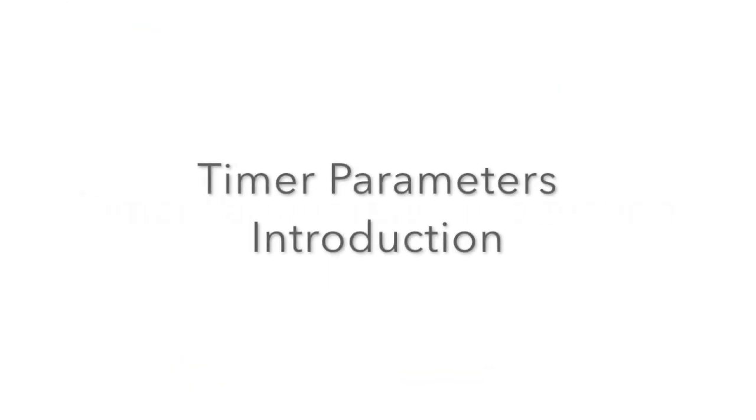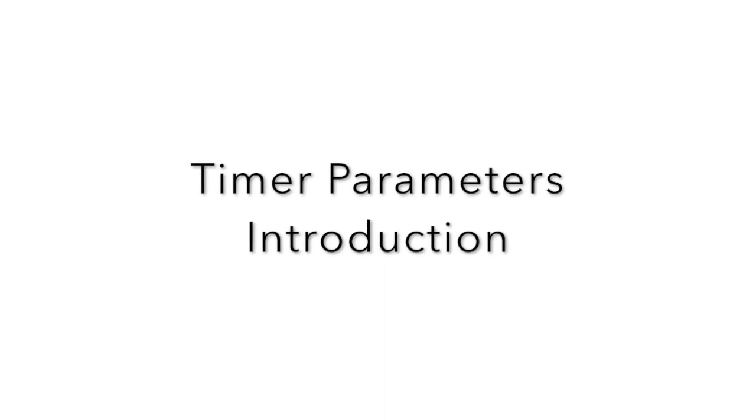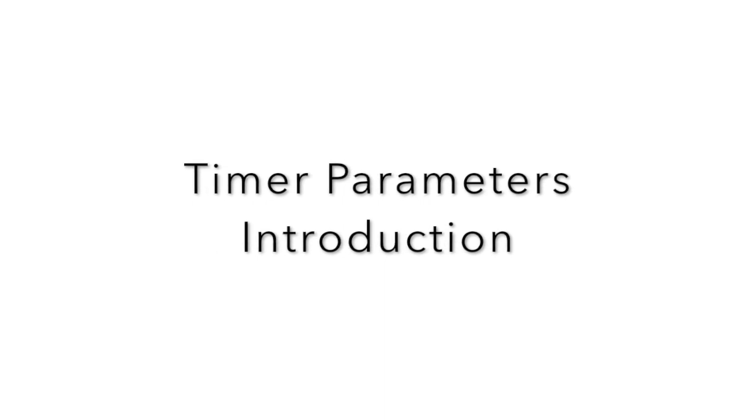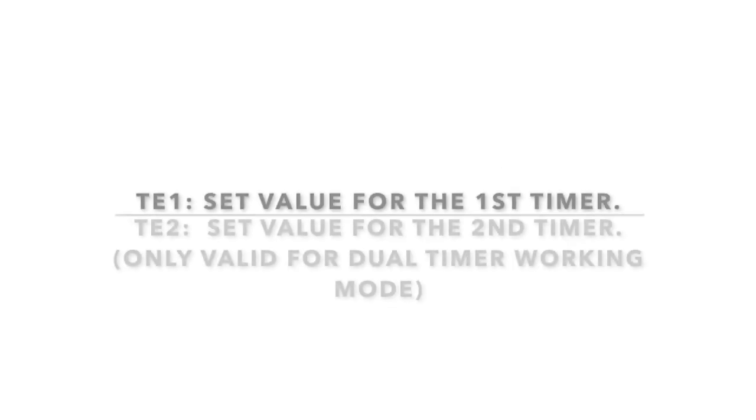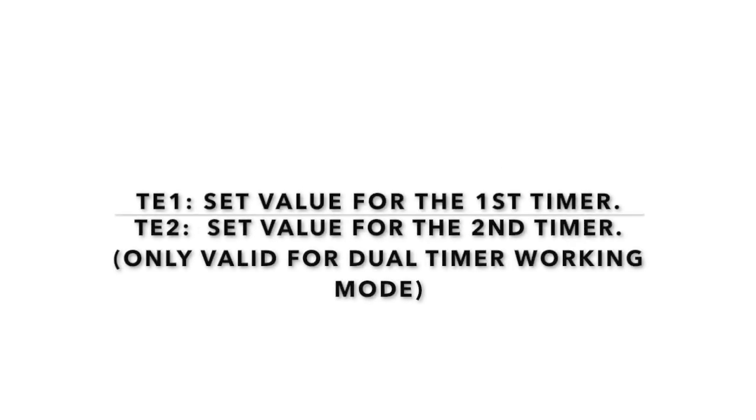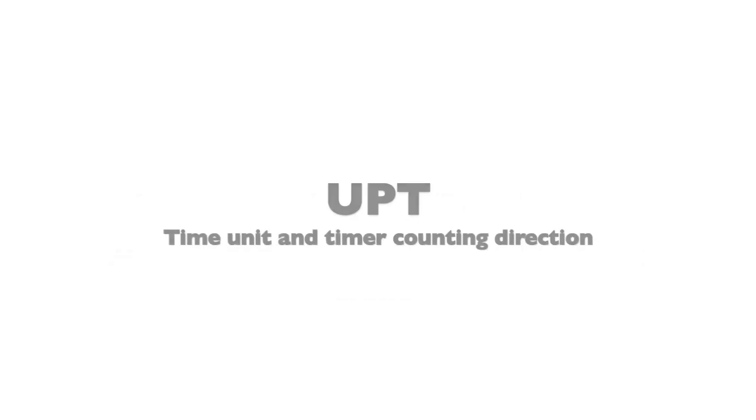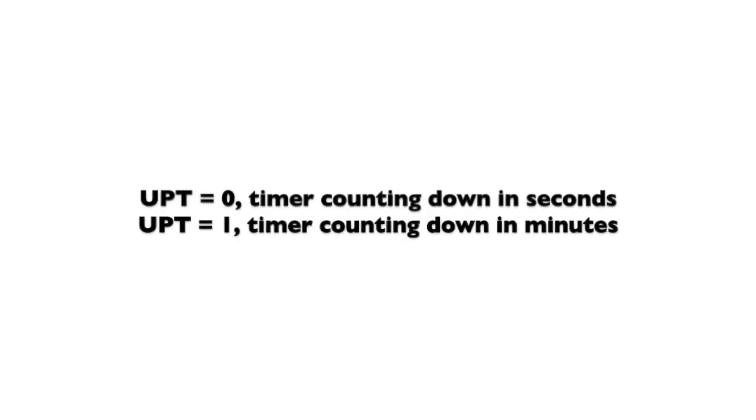In the timer parameter editing profile, there are four parameters you can edit: TE1, TE2, UPT, and INT. TE1 and TE2 are the set value for the first and second timer. UPT is the parameter for selecting your time unit and timer counting direction.